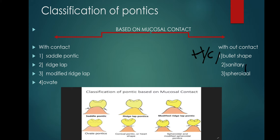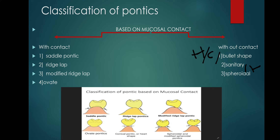Sanitary pontics are also called hygienic pontics. These also have zero tissue contact. Since they are highly inesthetic, the tissue should be 3 mm away from the pontic. There is a 3 mm gap maintained between the pontic and the tissue.